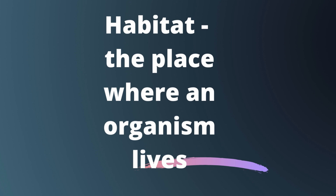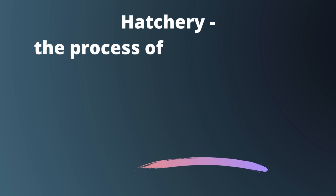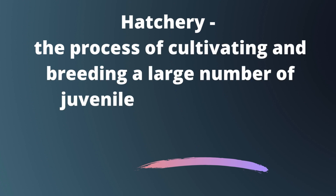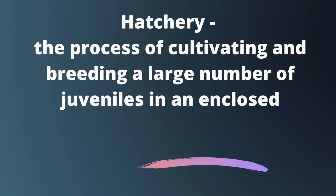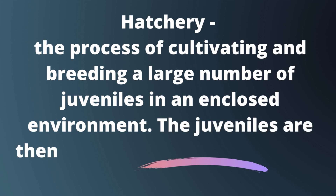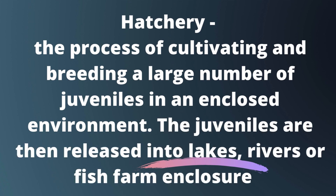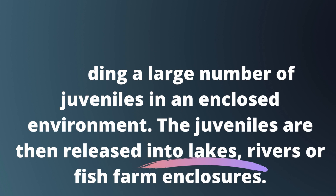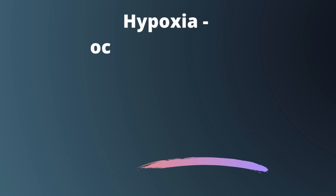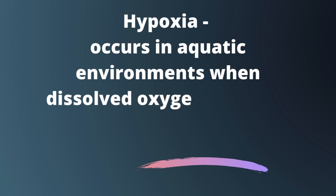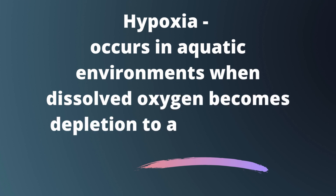Hatchery: the process of cultivating and breeding a large number of juveniles in an enclosed environment; the juveniles are then released into lakes, rivers, or fish farm enclosures. Hypoxia: occurs in aquatic environments when dissolved oxygen becomes depleted to a level which is harmful to aquatic organisms.